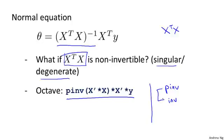The differences between these two are somewhat technical. One's called the pseudo inverse, one's called the inverse. But you can show mathematically that so long as you use the pinv function, then this will actually compute the value of theta that you want, even if X transpose X is non-invertible.